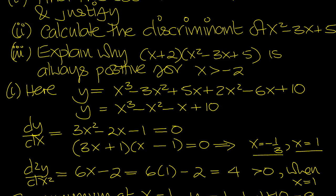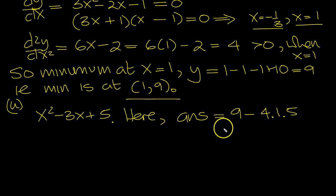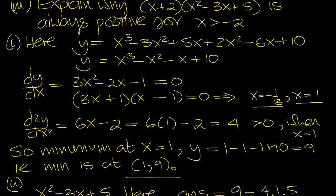Calculate the discriminant of this. x squared minus 3x plus 5. This is part 2. Here, answer. The discriminant is b squared minus 2 squared is 9, minus 4 times a, which is 1, times c, which is 5. 9 minus 20 is minus 11, which is less than 0. So the discriminant is negative, so there's no roots to that quadratic.